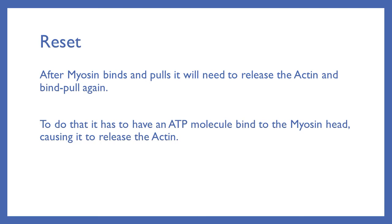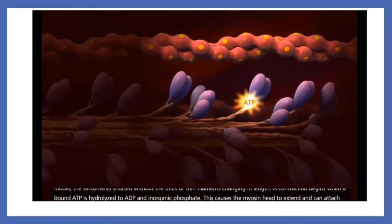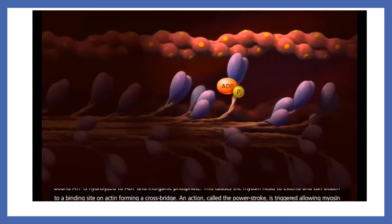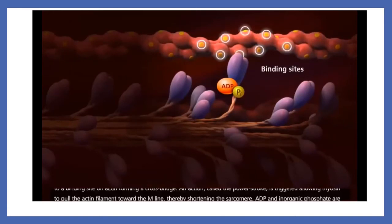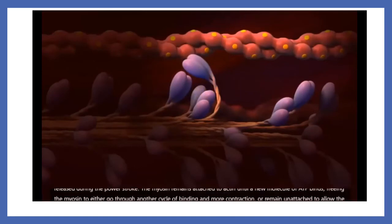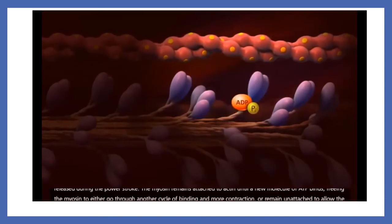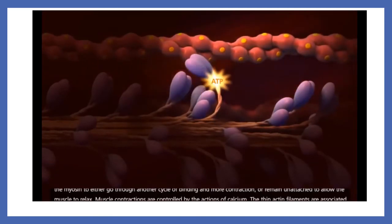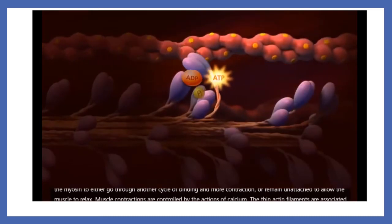After the myosin head binds and pulls, it will need to release the actin to bind and pull again. To do that, it has to have an ATP molecule bind to the myosin head, causing it to release the actin. A contraction begins when a bound ATP is hydrolyzed to ADP and inorganic phosphate, causing the myosin head to extend and attach to a binding site on actin, forming a crossbridge. The power stroke is triggered, pulling the actin filament toward the M-line, thereby shortening the sarcomere. ADP and inorganic phosphate are released during the power stroke. The myosin remains attached to actin until a new molecule of ATP binds, freeing the myosin to either go through another cycle of binding and contraction, or remain unattached to allow the muscle to relax.